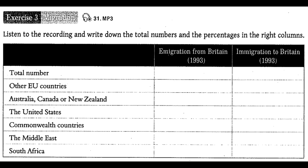Here are some figures about Britain's migration in 1993. There were 227,000 people who left Britain to live abroad. 25% of them left for other EU countries.